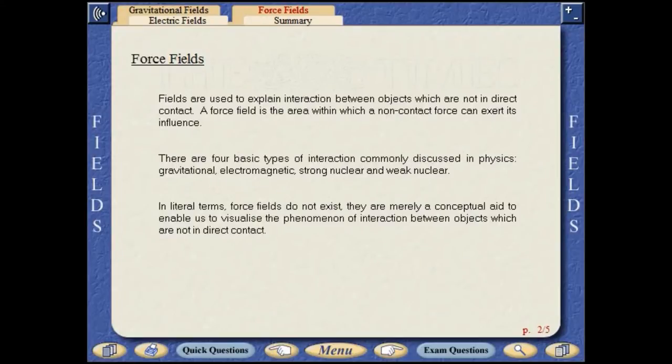Fields are used to explain interaction between objects which are not in direct contact. A force field is the area within which a non-contact force can exert its influence. There are four basic types of interaction commonly discussed in physics: gravitational, electrical, magnetic and nuclear. In literal terms, force fields do not exist. They are merely a conceptual aid to enable us to visualize the bizarre phenomenon of interaction between objects which are not in direct contact.